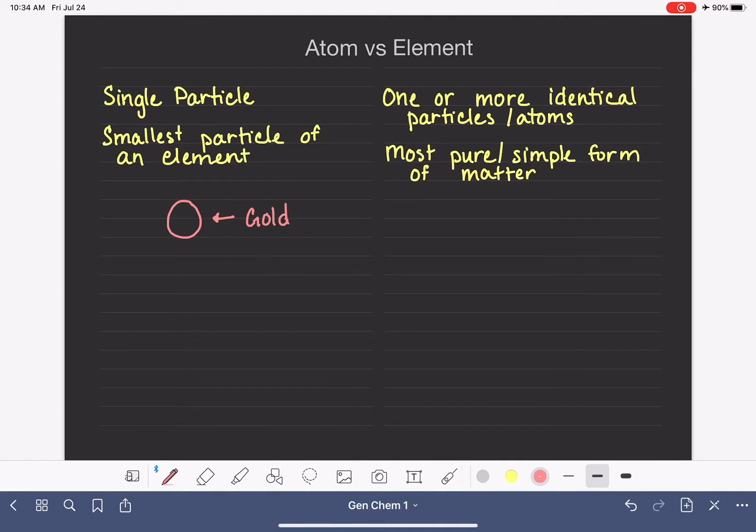If we have just one single particle of gold, one single atom, we would define that as an atom. If we take a few particles of gold, let's say we take four and we push them all together. These are four gold particles. With all four of them pushed together and we have many identical gold particles, we would refer to this as an element.